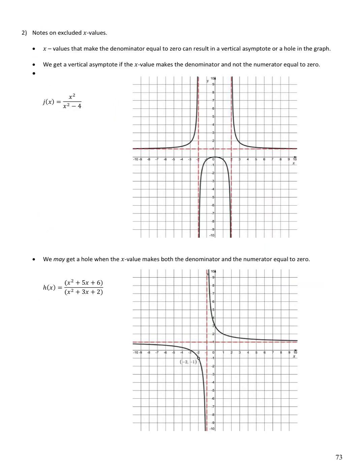Some notes on excluded x values: x values that make the denominator equal to 0 can result in a vertical asymptote or a hole in the graph. We get a vertical asymptote if the x value makes the denominator, but not the numerator, equal to 0. In this case, x = ±2 both make the denominator 0 but not the numerator, so we have vertical asymptotes at x = 2 and x = -2.